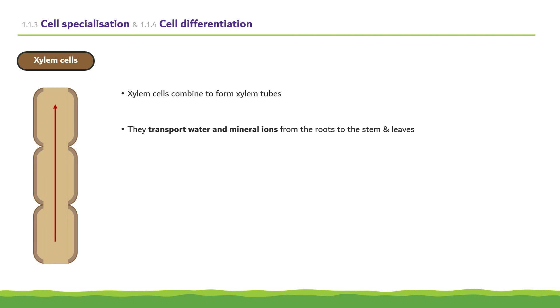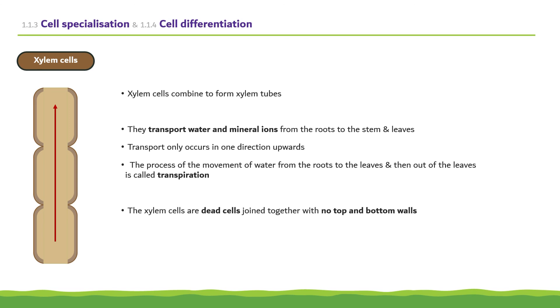Another specialized plant cell are xylem cells. Xylem cells combine to form xylem tubes. They transport water and mineral ions from the roots to the stem and leaves. This transport only occurs in one direction, upwards, with the process of the movement of water from the roots to the leaves and then out of the leaves being called transpiration. The xylem cells are dead cells joined together with no top or bottom cell walls. This results in a continuous column of water running through them. The walls of the xylem cells become thickened and woody and therefore support the plant.